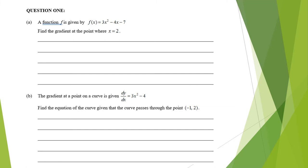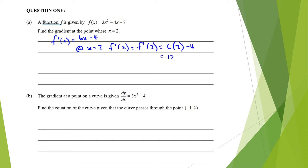The function is given by 3x squared minus 4x minus 7, and we're trying to find the gradient. We differentiate to get 6x minus 4. At x equals 2, f'(2) is 6 times 2 minus 4, that's 12 minus 4, which is 8.